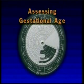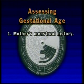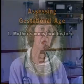Gestational age of the fetus or of the newly born infant can be assessed currently by three different methods. The first is the mother's menstrual history. An accurate menstrual history, when obtained, remains the best measure of gestational age, but depends upon normal maternal physiology and an accurate and reliable history.